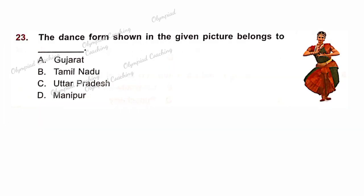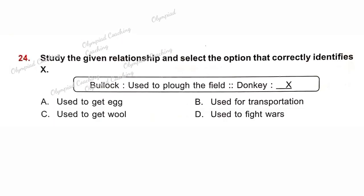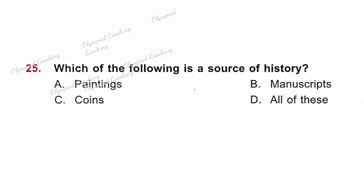Question No. 23: The dance form shown in the given picture belongs to which state? Option B is correct — the dance form is Bharatanatyam, which originated in Tamil Nadu. Question No. 24: Bullock is used to plough the field — similarly, a donkey is used for transferring goods or luggage. So option B is correct — used for transportation. Question No. 25: Which of the following is a source of history? Option D is correct — paintings, manuscripts, and coins are sources of history.